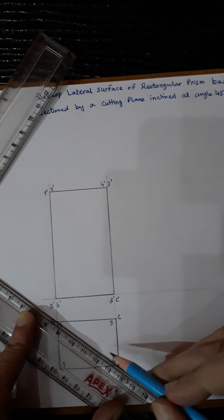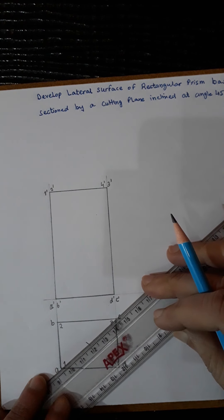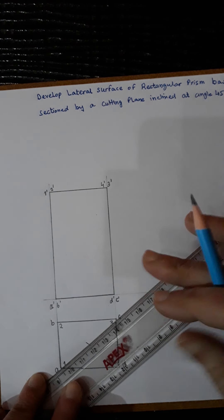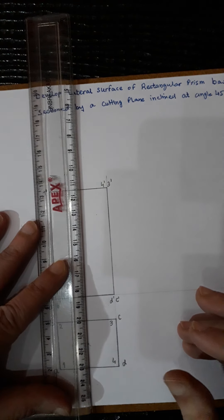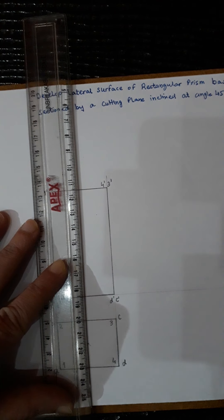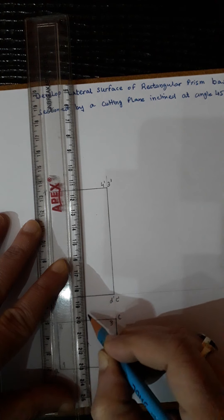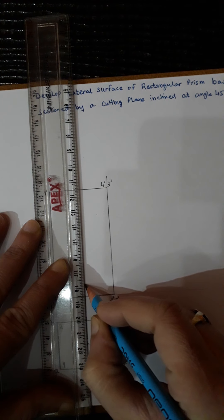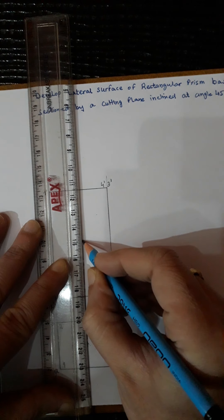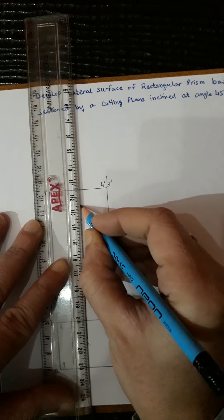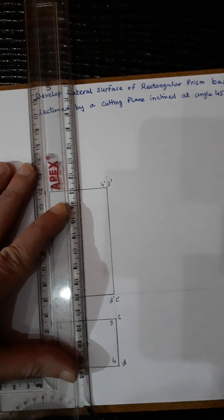Now you can find the center of this front view by joining the diagonals. Then draw a chain line axis through the center — this will be the axis of the rectangular prism.